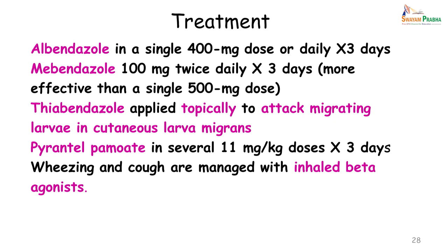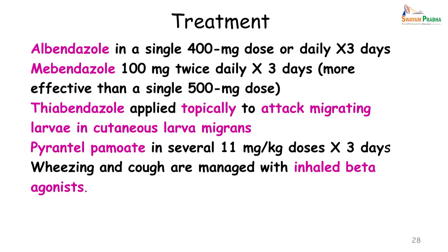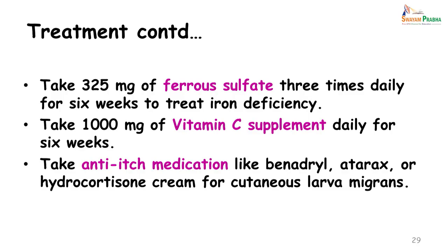When a patient presents with hookworm infestation — usually presenting with anemia — it is important to elicit a history of any skin lesions such as urticarial or serpentine rash, followed by pulmonary symptoms like a dry cough, to indicate whether the anemia may be due to hookworm. In addition to eliminating the worms, we must also treat the patient's anemia, give vitamin C supplements, and anti-itch medications like Benadryl, Atarax, or hydrocortisone cream for cutaneous larva migrans.